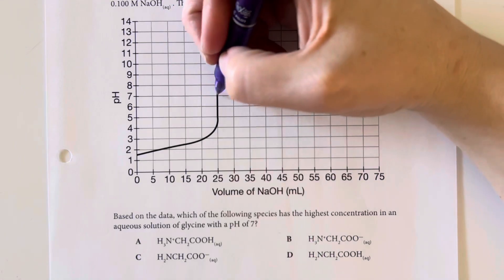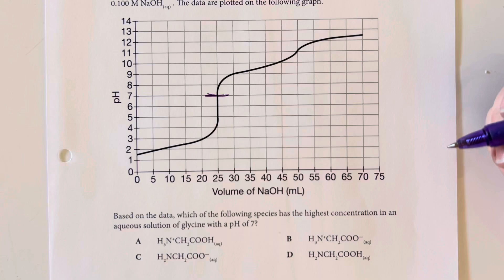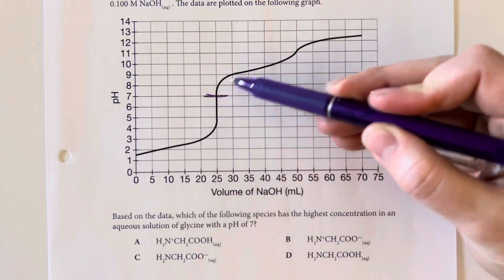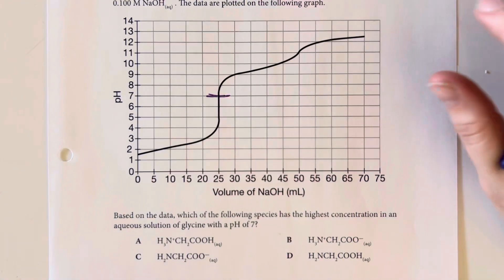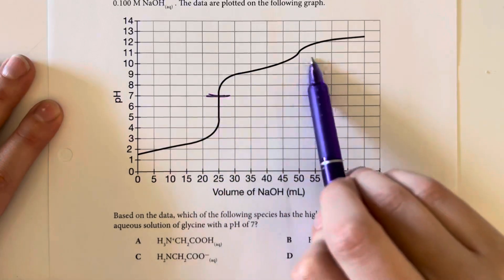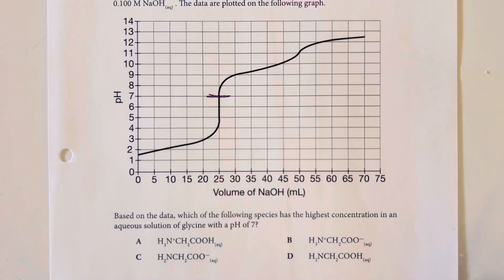So when pH is at 7, we are right here, and that is going to be when we really start flipping up and have our first instance where we are changing our pH. So initially, our pH is very acidic.